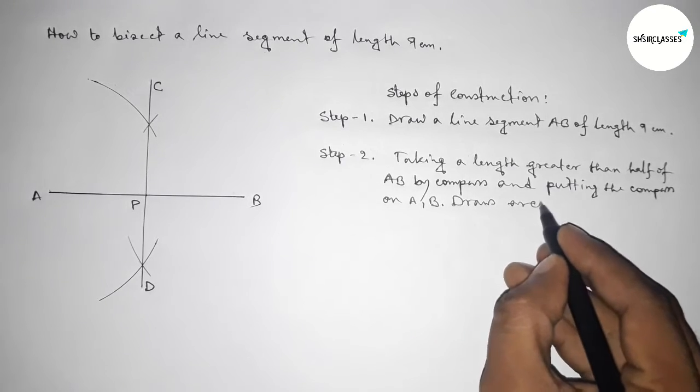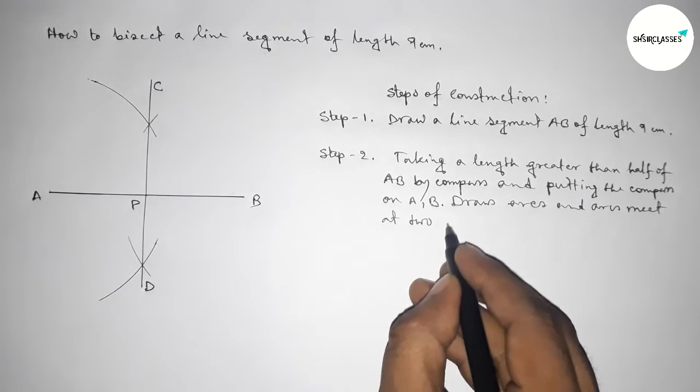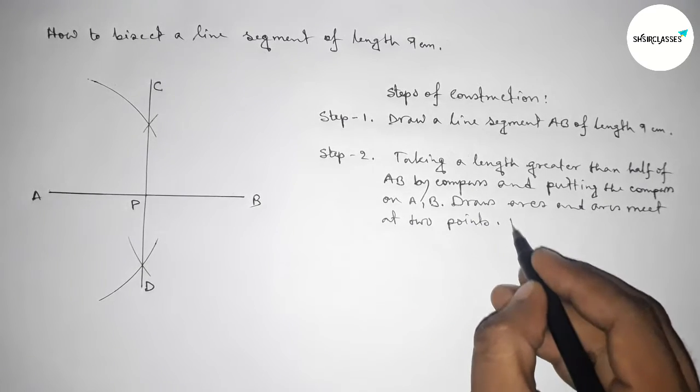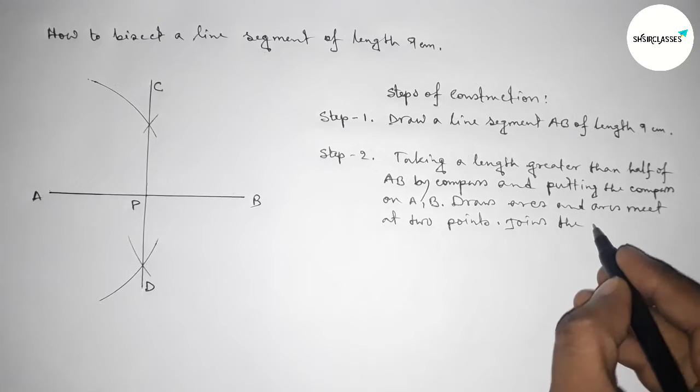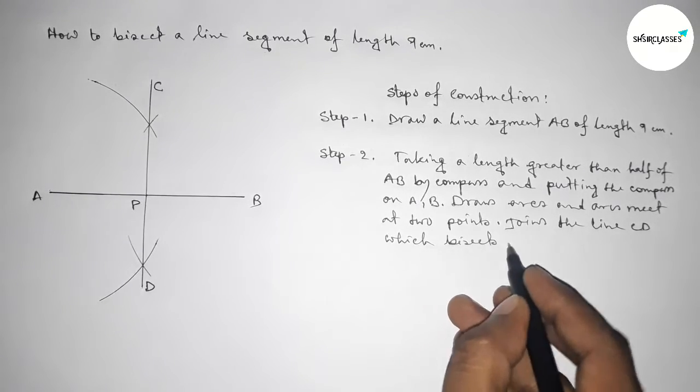The arcs meet at two points. Join the line CD which bisects the line AB at point P.